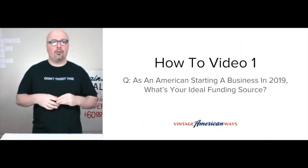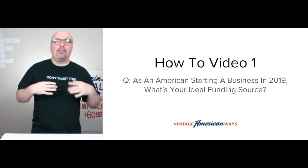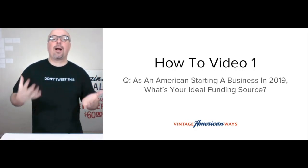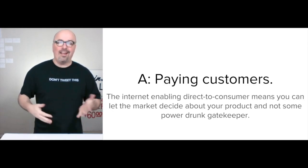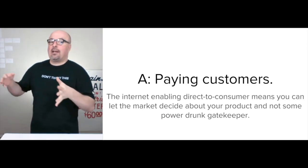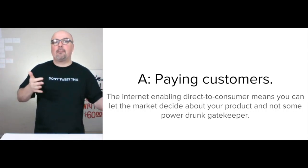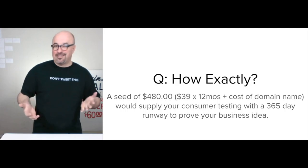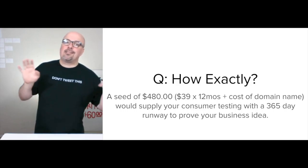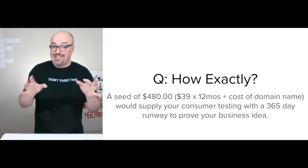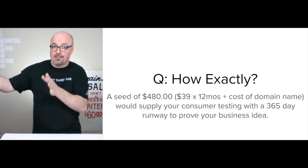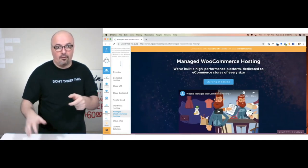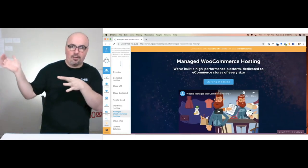Here's an example how-to video. The question I'm going to answer is: as an American starting a business in 2019, what's your ideal funding source? The answer is paying customers. The internet enables direct-to-consumer, which means you can let the market decide about your product and not some power-drunk gatekeeper. With a seed of $480, that would supply your consumer testing — giving you hosting of a WooCommerce installation and a 365-day runway to prove your business idea. Go to LiquidWeb.com/products/managed-woocommerce-hosting and they'll even give you 25% off month one.